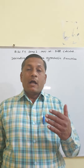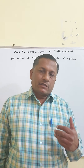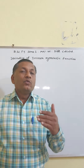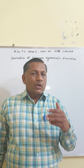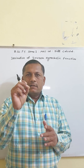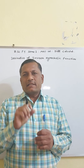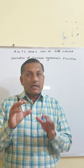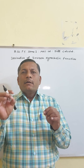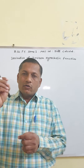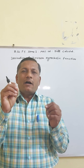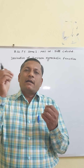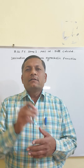We know the derivative of hyperbolic functions. Now we are going to learn the derivative of inverse hyperbolic functions. The hyperbolic functions are sinh x, cosh x, tanh x, sech x, cosech x, and coth x. Inverse hyperbolic means we find the derivative of sinh⁻¹x, cosh⁻¹x, tanh⁻¹x, and so on.